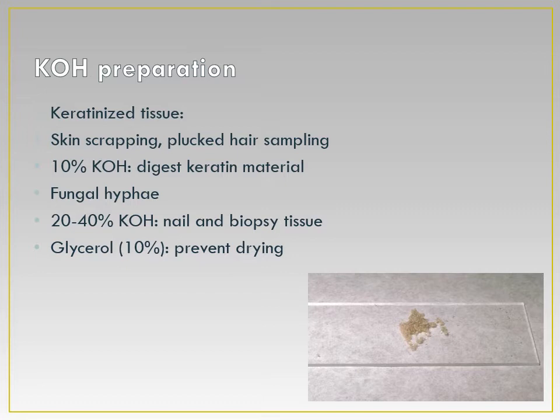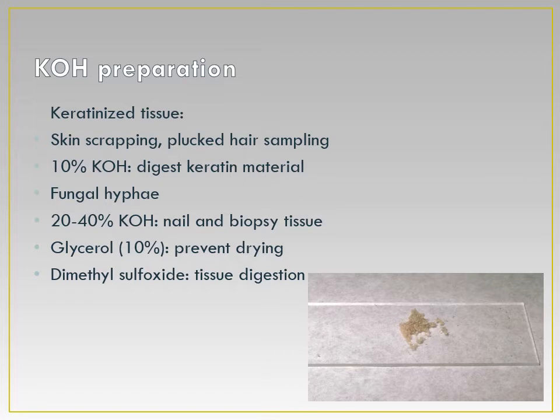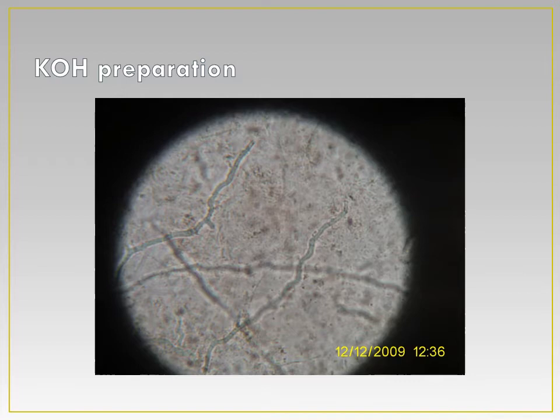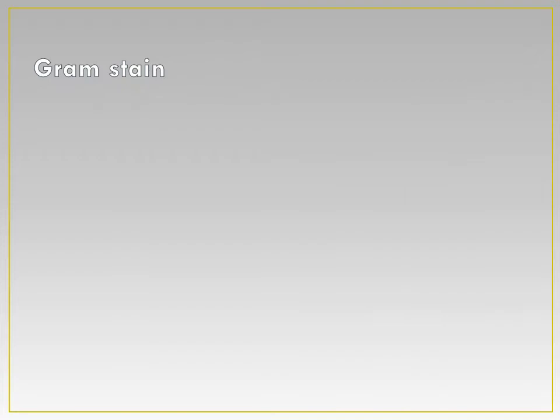Glycerol at 10% can be added to prevent drying of the preparation. DMSO — dimethyl sulfoxide — can also be used to help tissue digestion. The KOH preparation is used for specimens like hair, skin scrapings, or nails, which are keratinized tissues. In the picture of the KOH preparation, you can clearly see the hyphae.